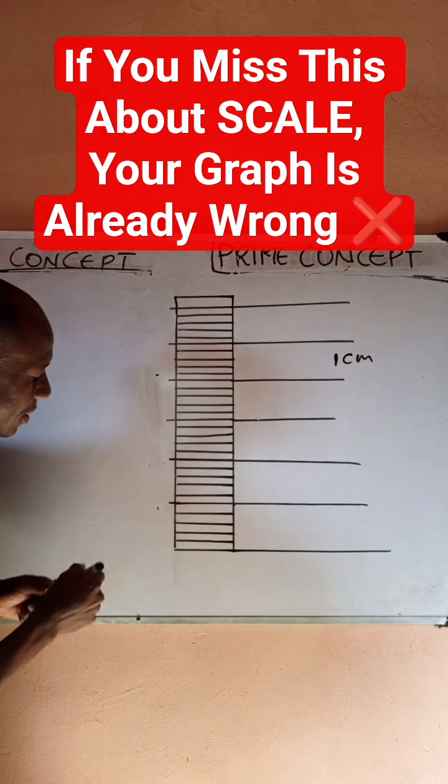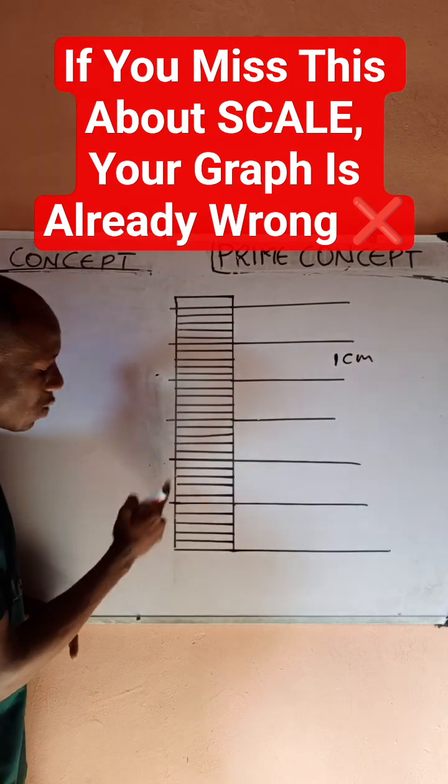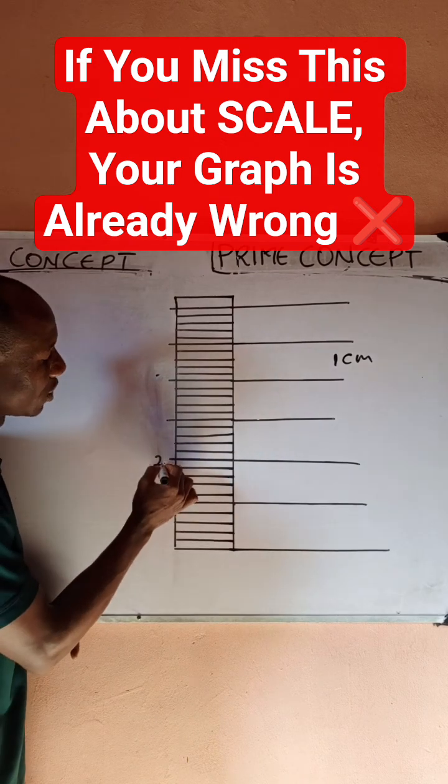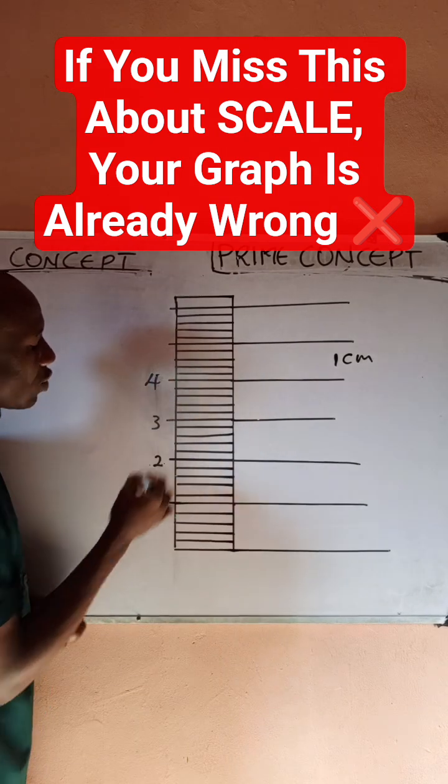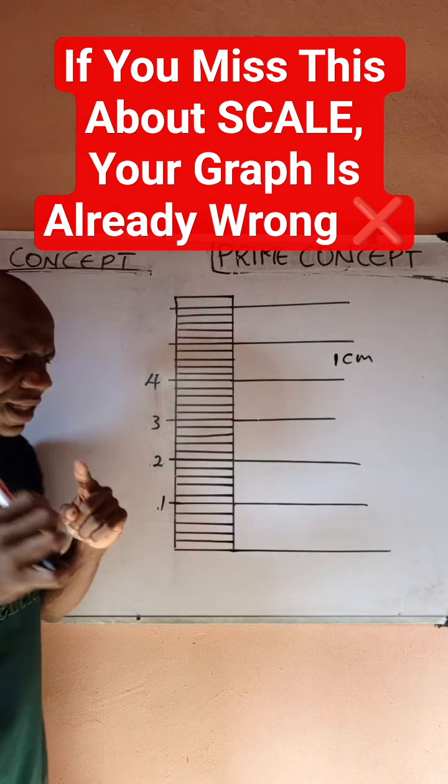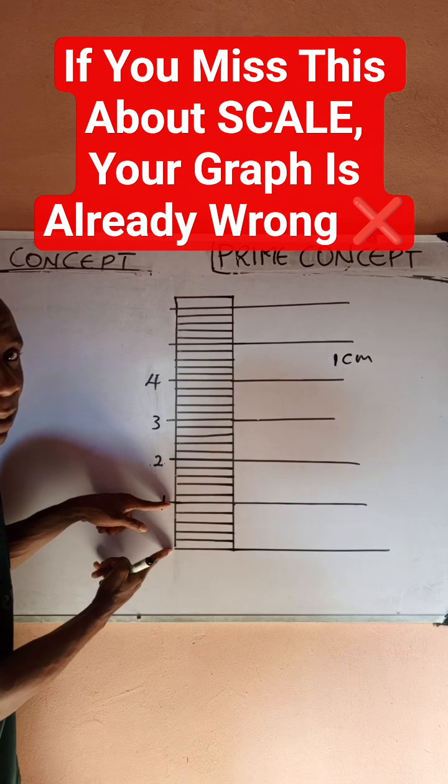So if this is 1, this would be 2, this would be 3, this would be 4, and so on. So you notice that for each 1 cm box, the numbers are increasing by 1.